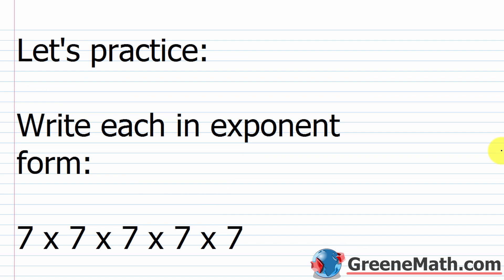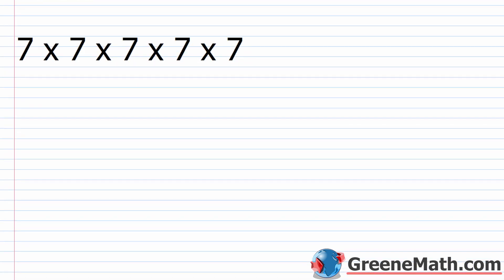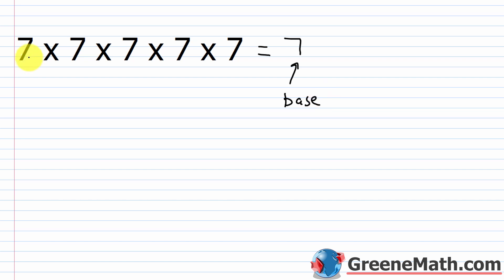Let's do some basic practice writing expressions in exponent form. I have 7 times 7 times 7 times 7 times 7. The base is the number being multiplied by itself, so that's 7. The exponent tells me how many factors of 7 I have: 1, 2, 3, 4, 5. So 5 is the exponent.